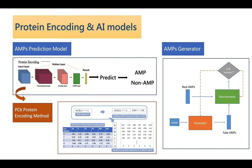We also built an AMPs generator. The generator is trained along with the discriminator. The generator will create fake AMPs to fool the discriminator, and the duty of the discriminator is to discern real AMPs data from those fake AMPs data. Finally, the generator will be able to create AMPs with high quality.